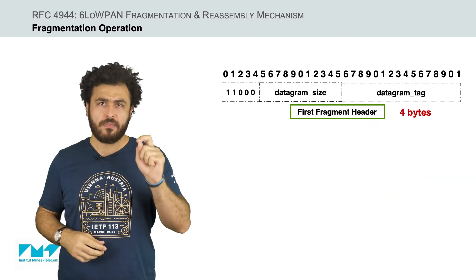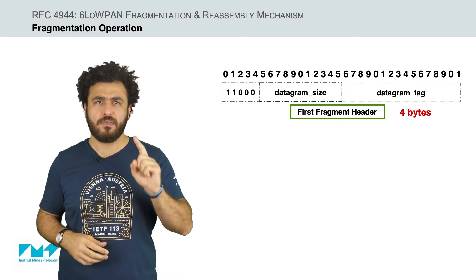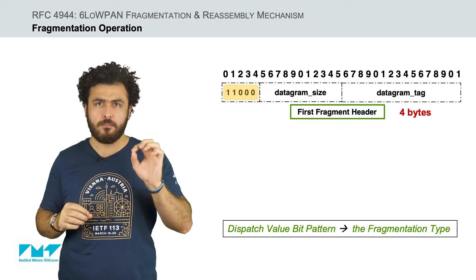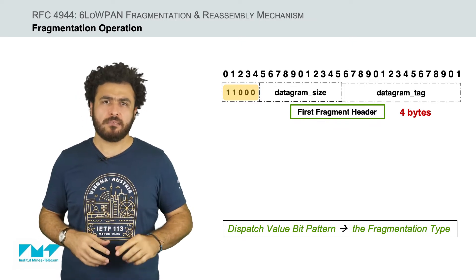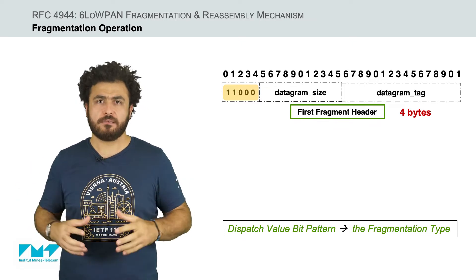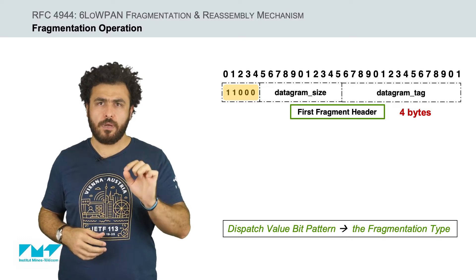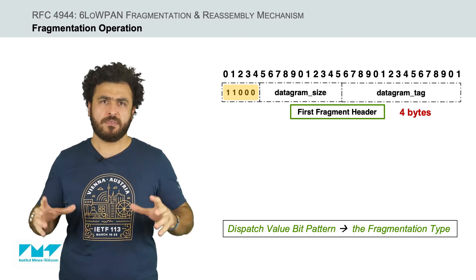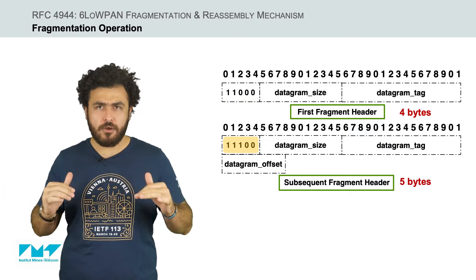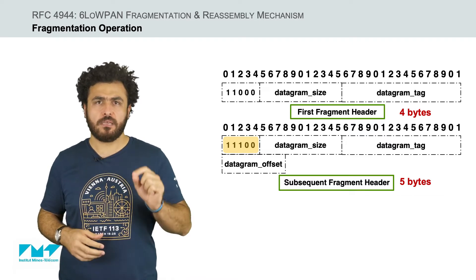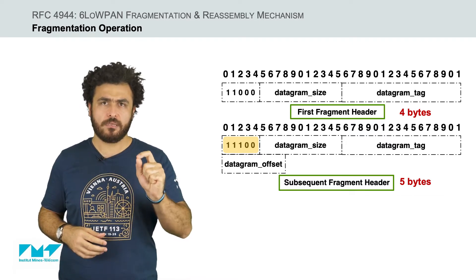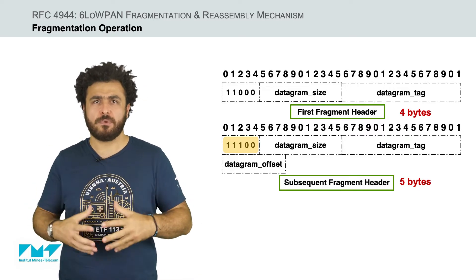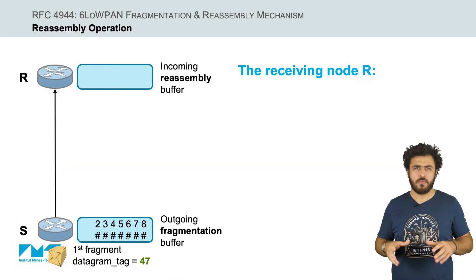Here we have the fragmentation type and header format for the first fragment, where the first 5 bits of the dispatch value bit pattern indicates the fragmentation type. In this case it is equal to 11000, which represents the first fragment of an IPv6 datagram. While in the figure below, the first 5 bits is equal to 11000, which represents the second or subsequent fragment of an IPv6 datagram.